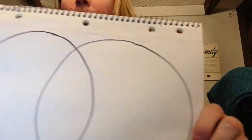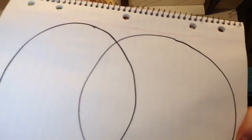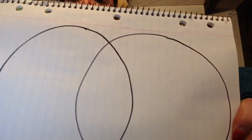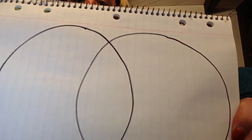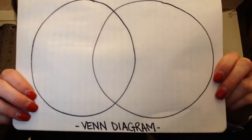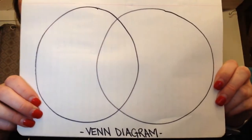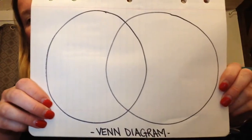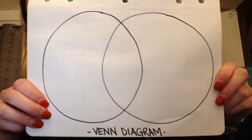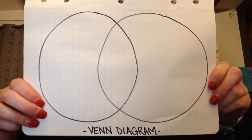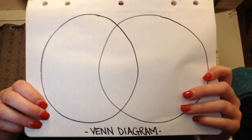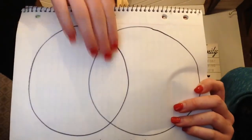A lot of times when you compare and contrast you use this. Does this look familiar to anyone? Anybody know what this is called? It's called a Venn diagram. If you would like to make a Venn diagram at home, I just suggest that you do two circles and they overlap each other in the middle.